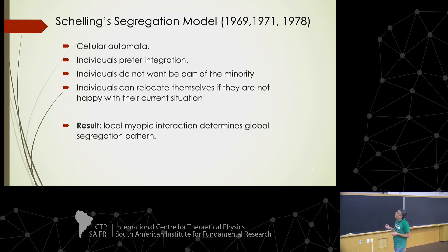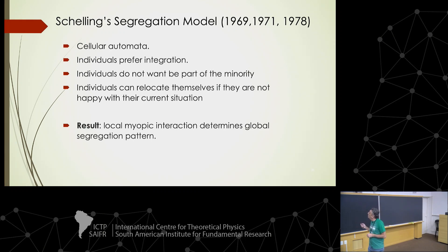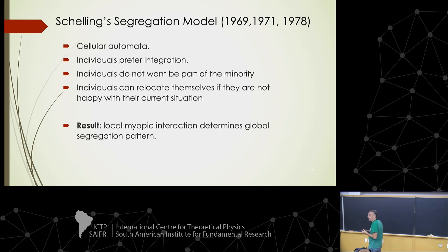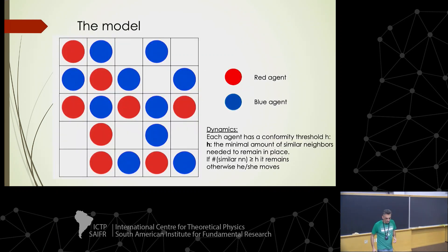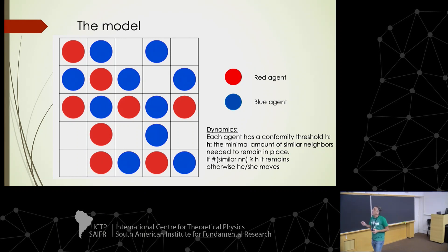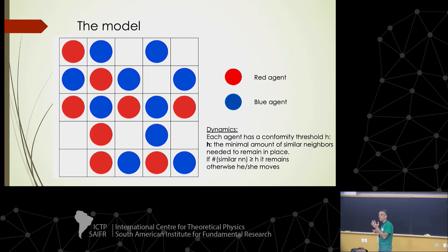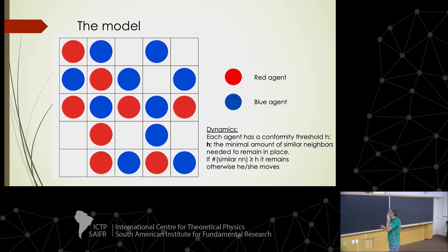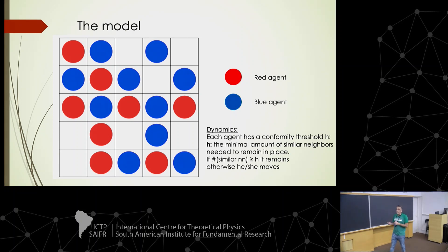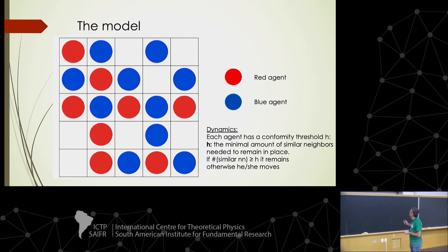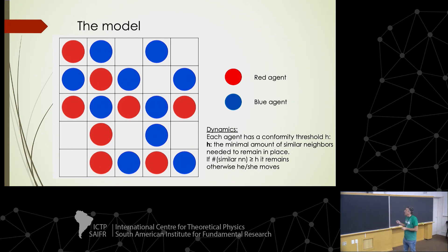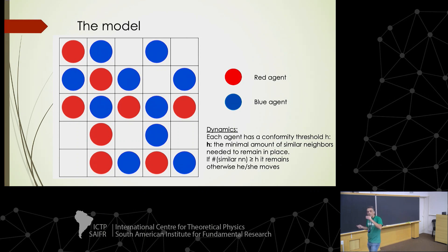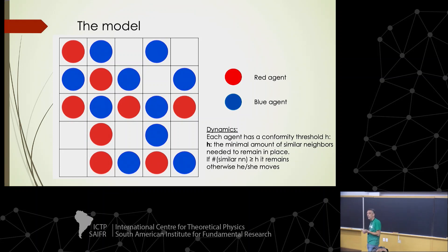In this automaton, individuals prefer integration — they don't want to be part of a minority. If they are not comfortable in the place they are living, they can move around. For instance, let's picture that we have two kinds of agents — red agents and blue agents — and we also have empty places. We assume that each agent has a conformity threshold: this threshold is the minimal amount of similar neighbors needed to remain in place. If the number of similar neighbors is above the threshold, the agent remains; otherwise it moves.